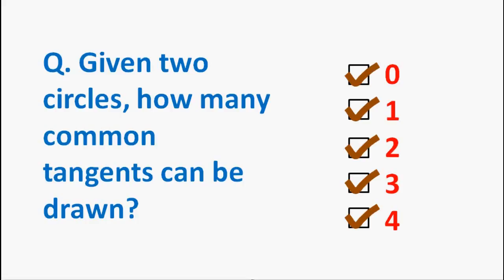So, coming back to our original question, how many common tangents can be drawn to two circles? We have seen it can be 0 or 1 or 2 or 3 or 4, depending on the location of the two circles with respect to each other. So, all the answers are correct in some or the other case.